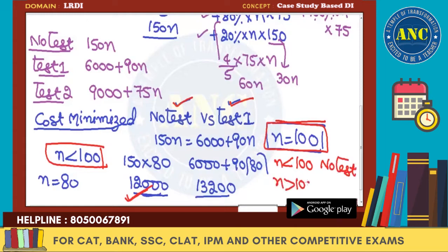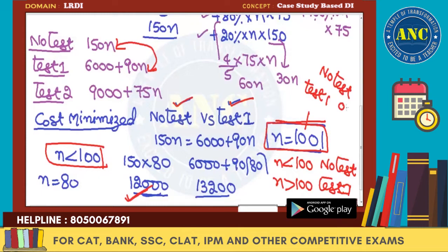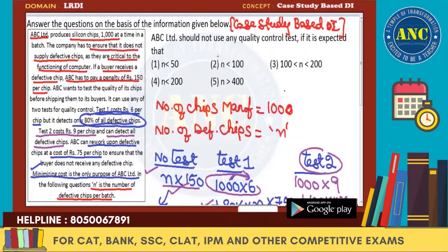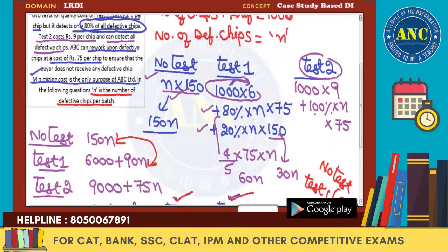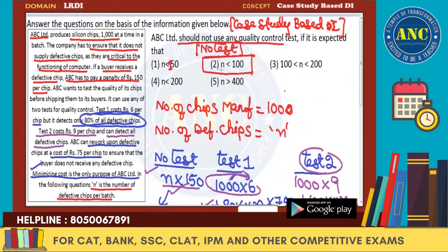If N is greater than 100, use Test 1. Summary: if N equals 100, either No test or Test 1 can be used. If N is less than 100, use No test. If N is greater than 100, use Test 1. So the answer to Question 1 — ABC should not use any quality control test when N is less than 100.